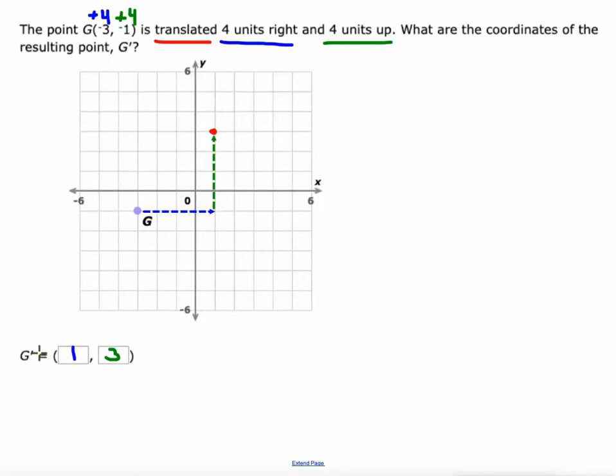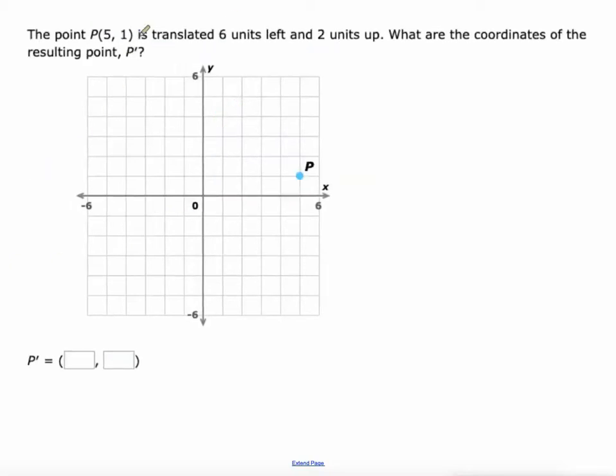By the way, that apostrophe right there next to the G means G prime. So our original image is G, our new image or copy of the image is called G prime. Let's do this again.